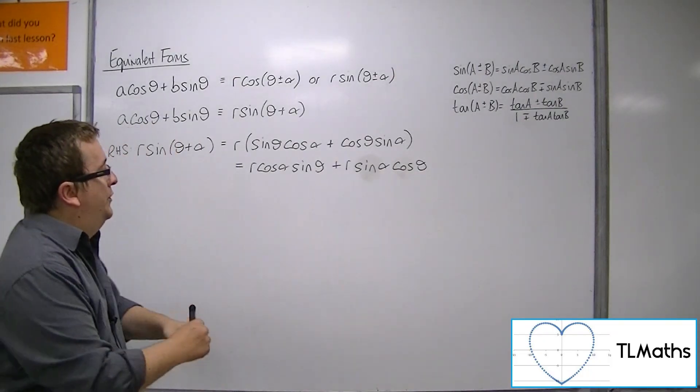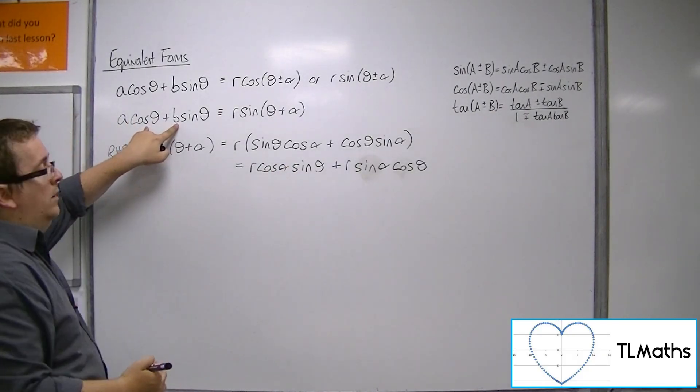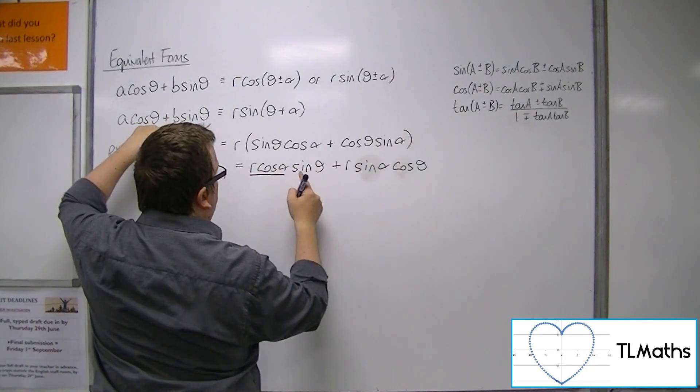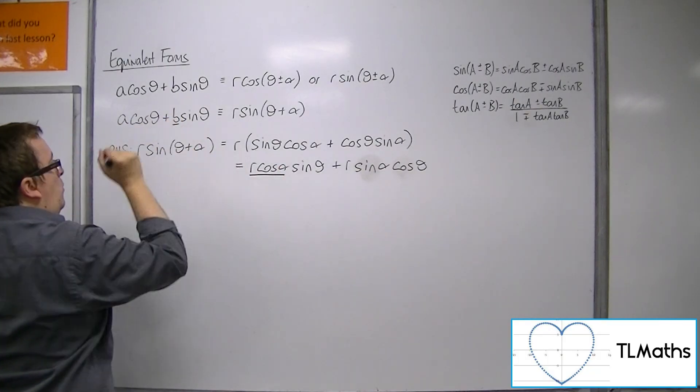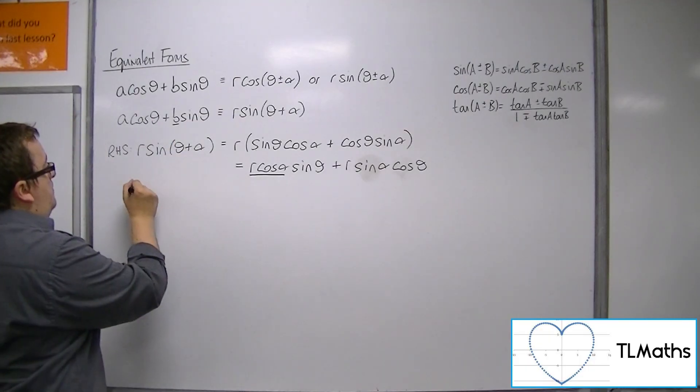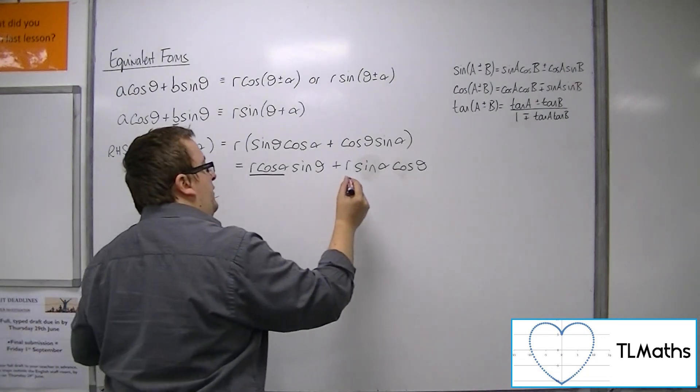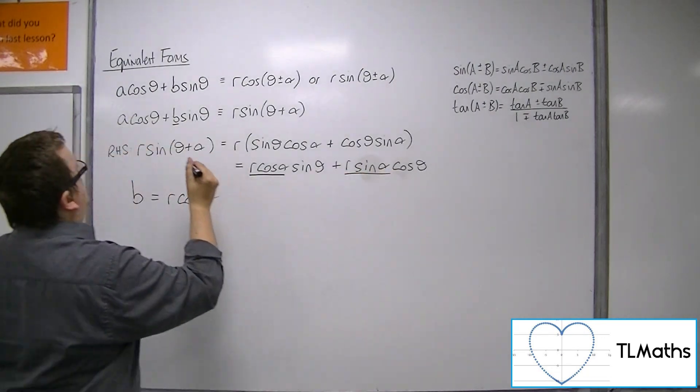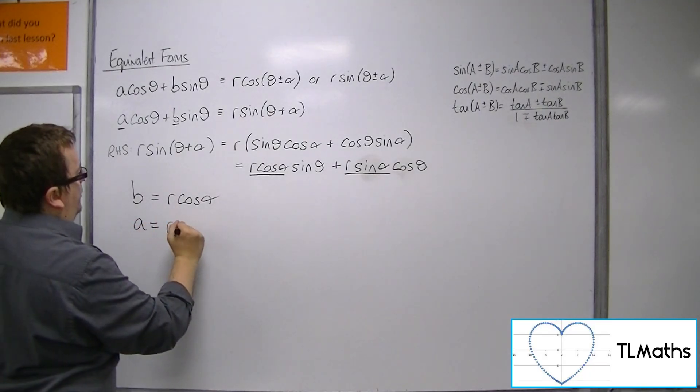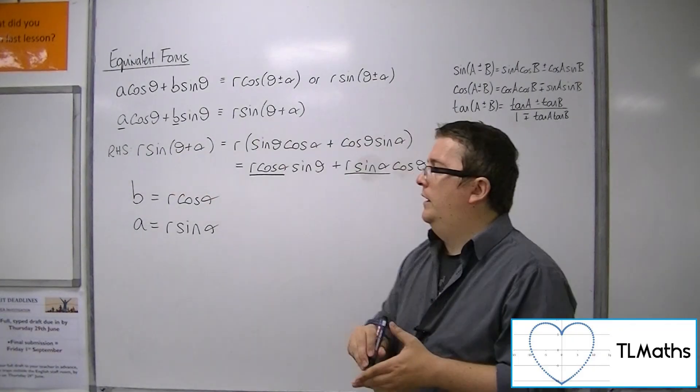So what we've now got is something that actually looks like my original bit on the left-hand side here. Because now what I can say is that what's in front of the sine theta here must be what's in front of the sine theta here. So I can say that b is r cos alpha. And what is in front of the cos theta here must be what's in front of the cos theta here. So a is r sine alpha. It's like comparing coefficients, effectively.